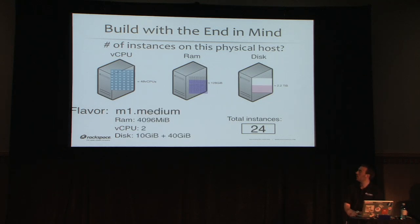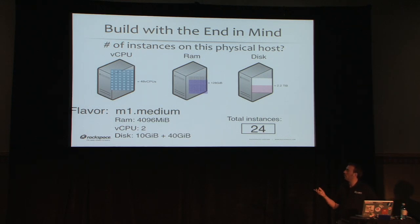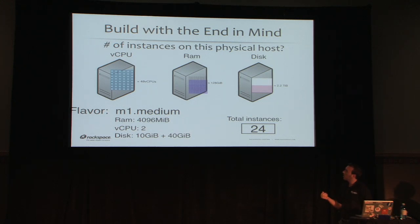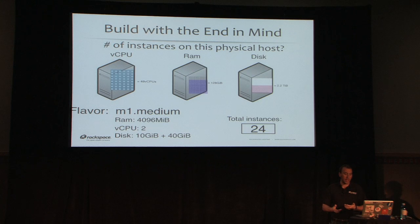If we take the M1 Medium flavor — 4 GB RAM, 2 CPUs, ~50 GB disk — this is a much more realistic workload. Once I've consumed all CPUs, I'm using most of my RAM, which is good, and about half my disk space. That's a lot closer to what we want to strive for.